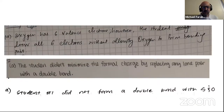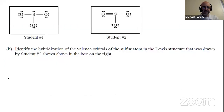Student one did not add the double bond and did not account for formal charge. Instead of doing a single bond, they needed to do one double bond between one set of S and O. Talk about the valence electrons — that was kind of a straightforward question, but a lot of students didn't count the valence electrons. Some responses said oxygen has six valence electrons and the student drew all six without allowing oxygen to form bonding pairs. It was just about 26 versus 24.